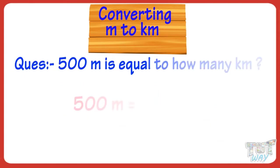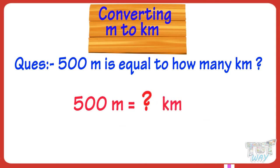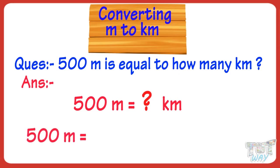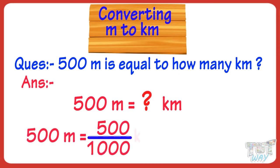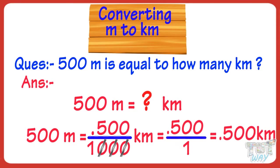500 meters equals how many kilometers? We will divide by 1,000. So 500 divided by 1,000 kilometers: cutting three zeros, we put the decimal after three digits from the right. We get 0.500, or 0.5 kilometers.